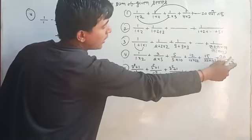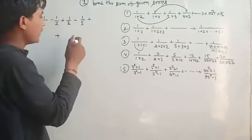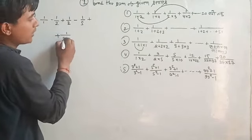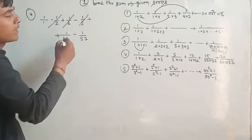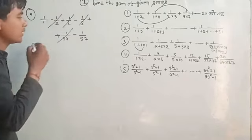20 upon 37 into 57. I can write this as 1 upon 37 minus 1 upon 57. What is the term? It is cut and cut and cut.